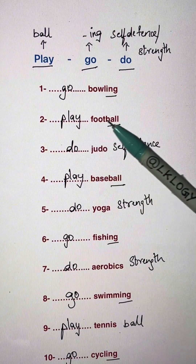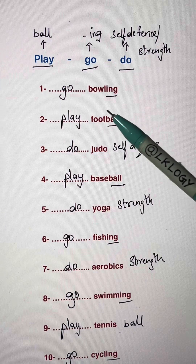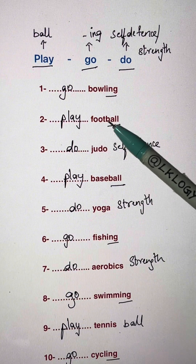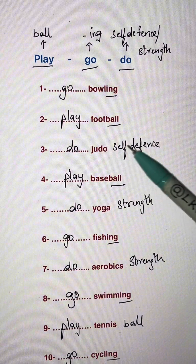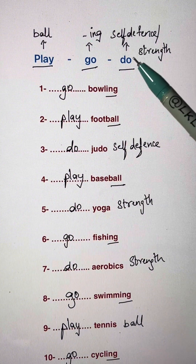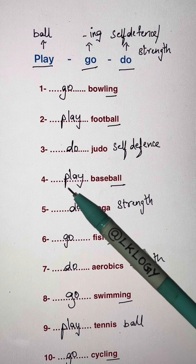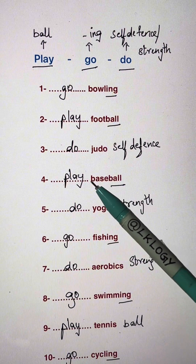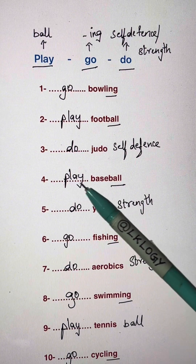Blank football — you have a ball, so it's a ball sport: play football. Blank judo — judo is a self-defense sport, so we use do: do judo. Blank baseball — you have a ball and it's a team sport: play baseball.